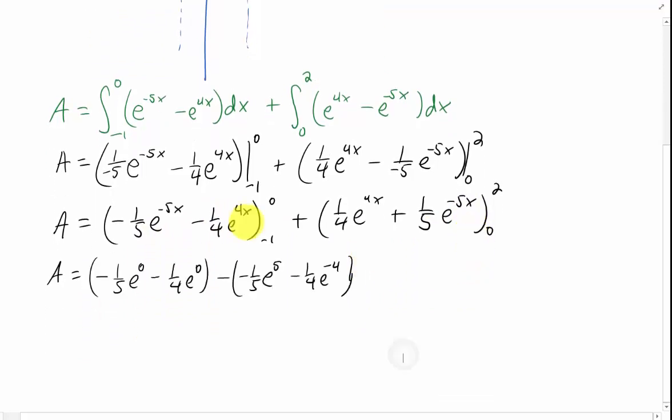And I can already tell that this is going to be ugly. When we plug in x equals negative 1 as our lower limit, plug that in right here, that's going to make the exponent on e a positive 5 for this term. And it's going to make the exponent on e a negative 4 for this term. Then plugging in our upper and lower limits on the second piece gives us an exponent of 8 and negative 10. Let's simplify what we can.